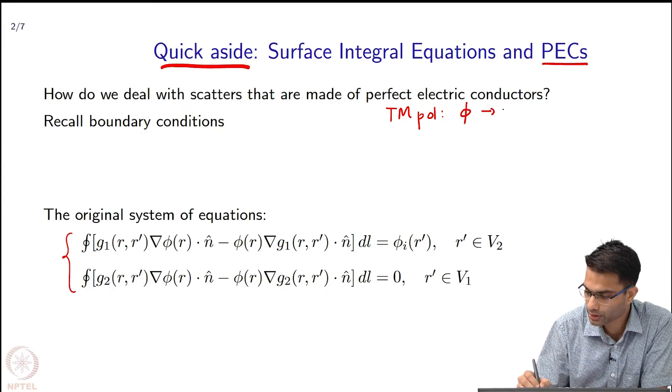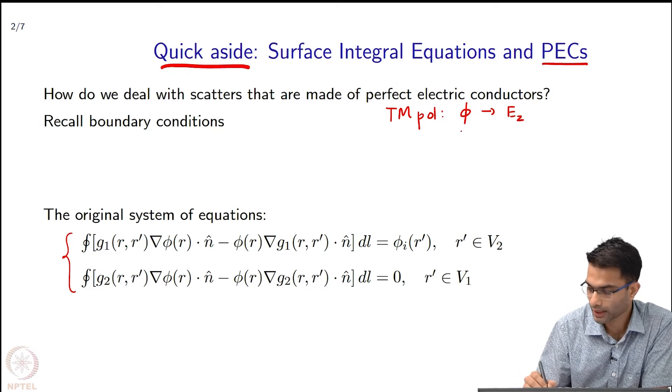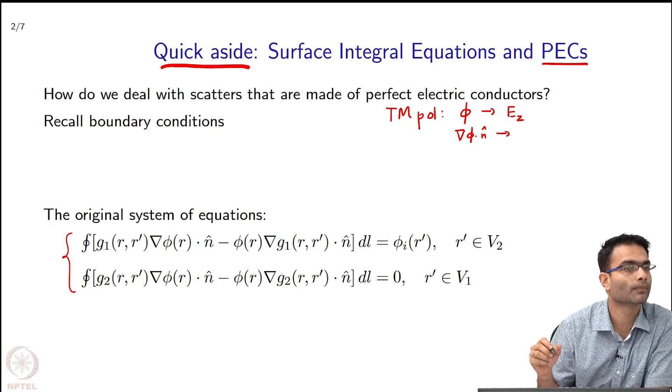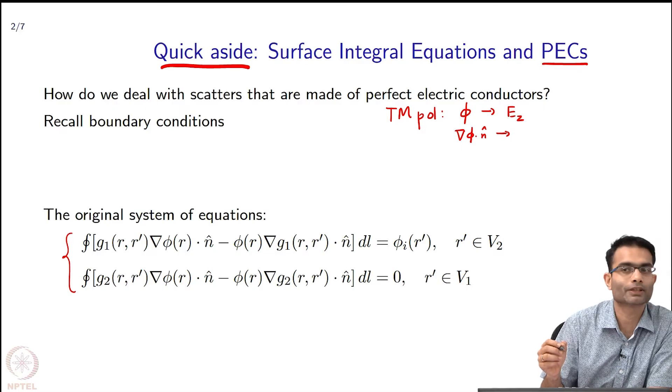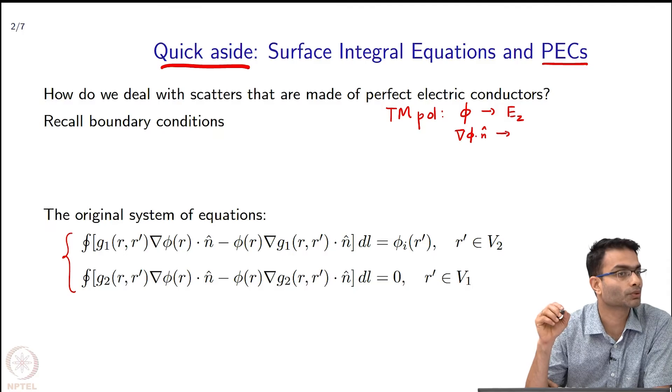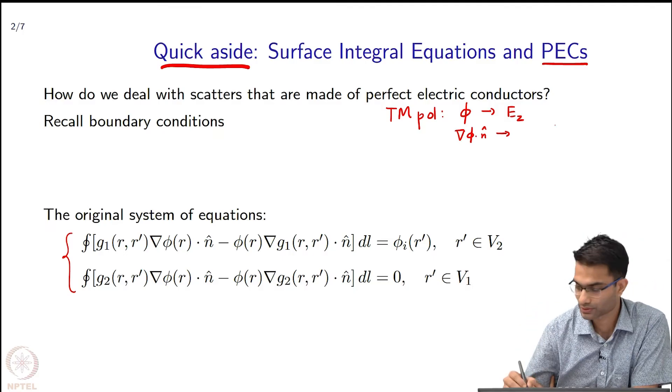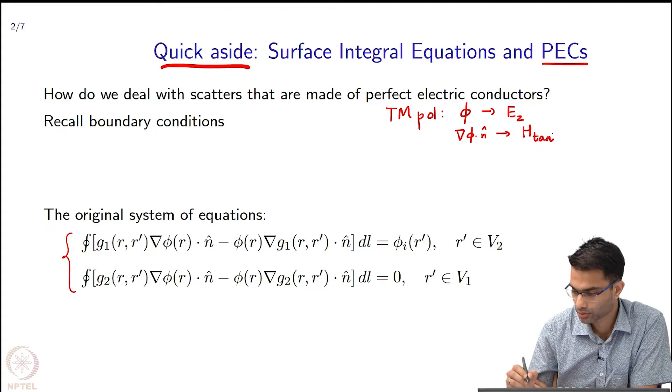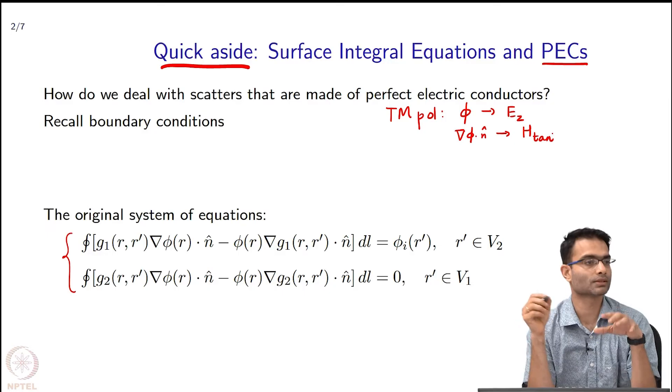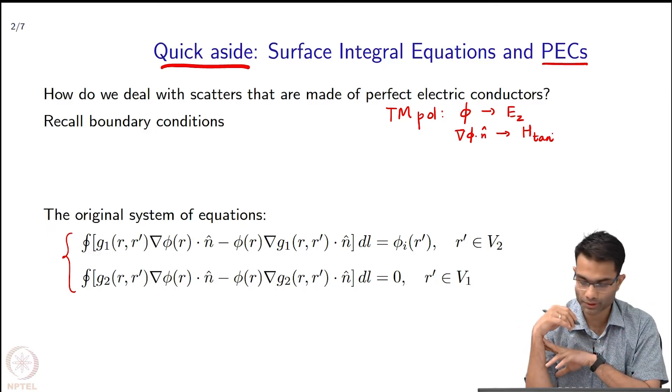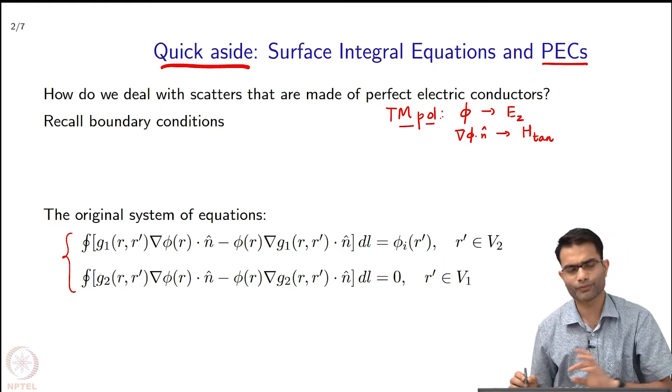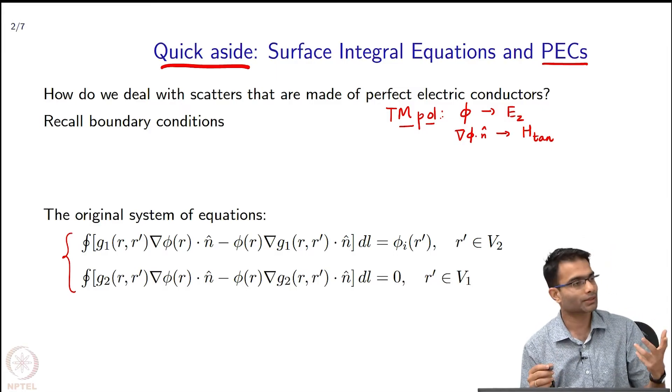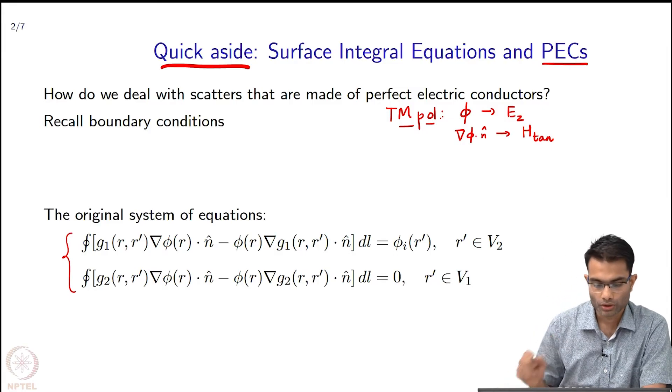So, particularly, φ was E, the z component, and grad φ dot n̂ we had given an interpretation as what was it proportional to—we had worked it out—it was proportional to the H tangential on the surface. So, we had interpreted these equations as a sort of linear combination of the tangential electric and magnetic fields, this was in TM polarization. Similarly, if you did for TE polarization you would get E tangential and H_z.